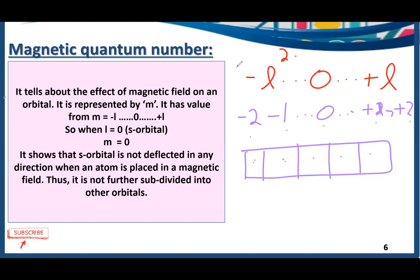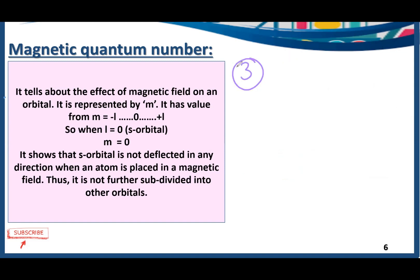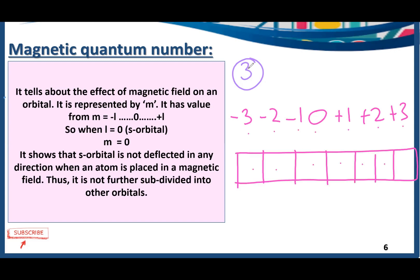For the f subshell, l equals 3, so m has values −3, −2, −1, 0, +1, +2, and +3 — giving us seven magnetic quantum numbers. When the electron is placed in a magnetic field, the f subshell is deflected in seven different directions. That is why it has seven different orbitals.